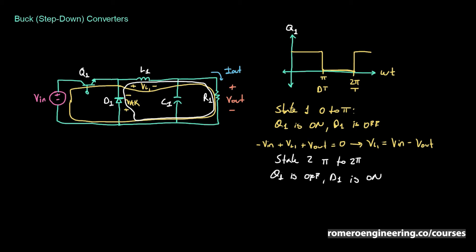Writing the voltage loop around the State 2 loop, we get V_L1 plus V_out equals zero. The voltage across the diode is zero because it looks like a short circuit. Therefore, for State 2, V_L1 is equal to minus V_out.